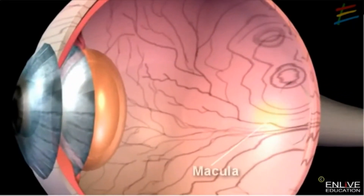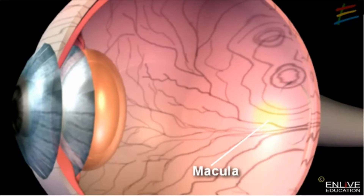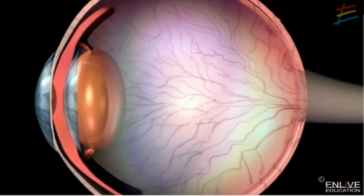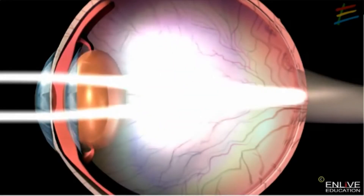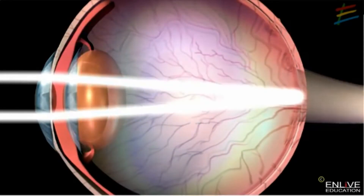The macula is a very small area at the center of the retina that gives us a fine, pinpoint center of vision. The area of retina surrounding the macula gives us peripheral or side vision. The retina converts light rays into signals sent to the optic nerve. Continual adjustment of the pupil and lens regulates the entry and focusing of light.